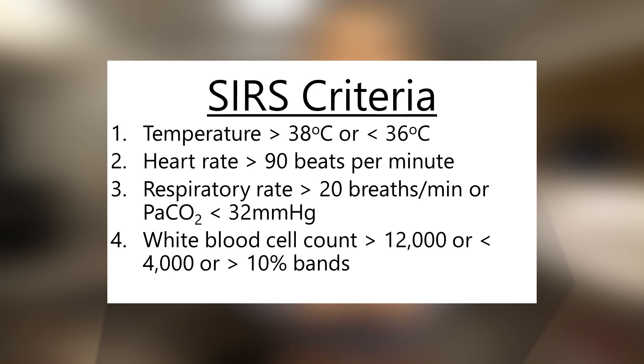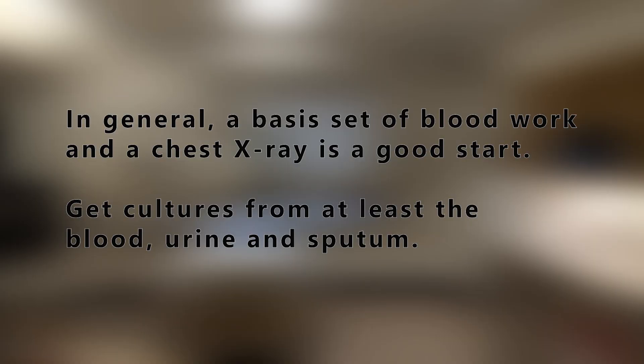Sepsis and septic shock can present in many different ways, so it's critical to maintain a high index of suspicion. A key component of making the diagnosis is to get a complete history and physical, specifically looking for SIRS criteria and examining from head to toe for evidence of meningitis down to diabetic foot ulcers. If the patient is obviously critically ill, treatment needs to be concurrent with your diagnosis. Initial investigations don't need to be esoteric — a general set of laboratory tests and a chest X-ray will likely put you on the right path. Culture any available body fluids such as blood, urine, and sputum. Blood cultures are most likely to be positive if drawn before antibiotics, but if the patient is critically ill, antibiotics before cultures may be necessary.